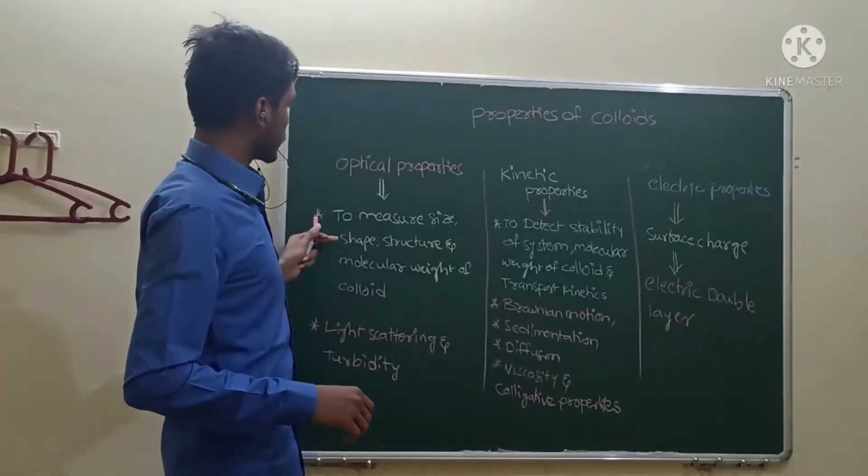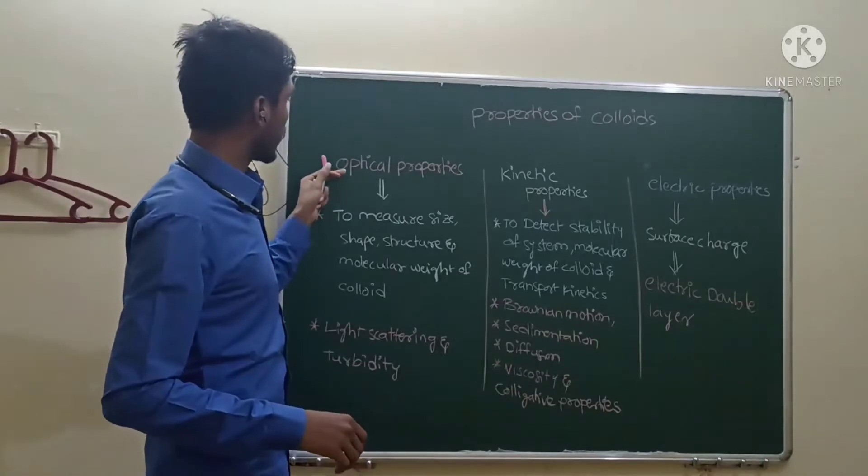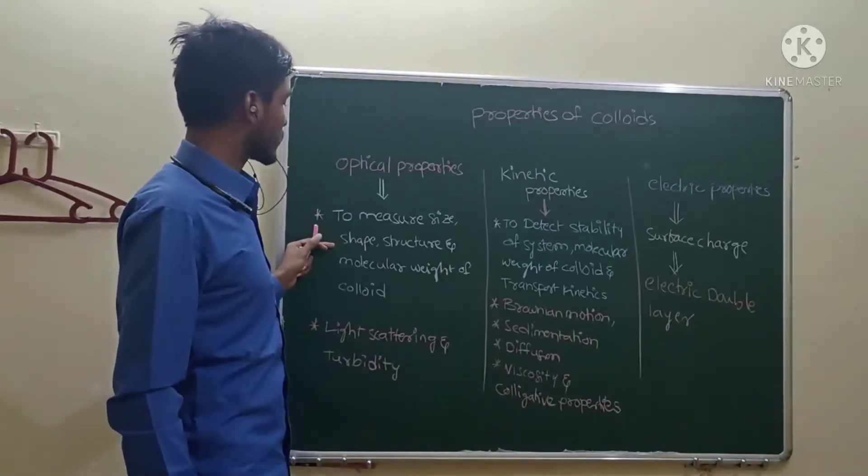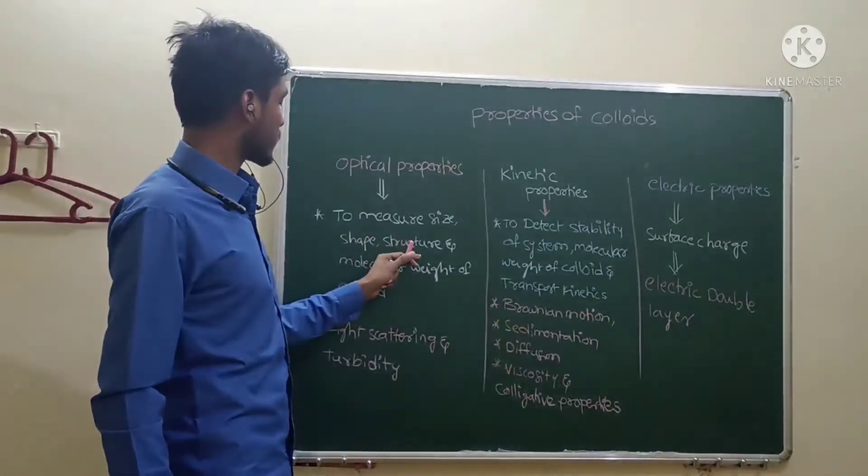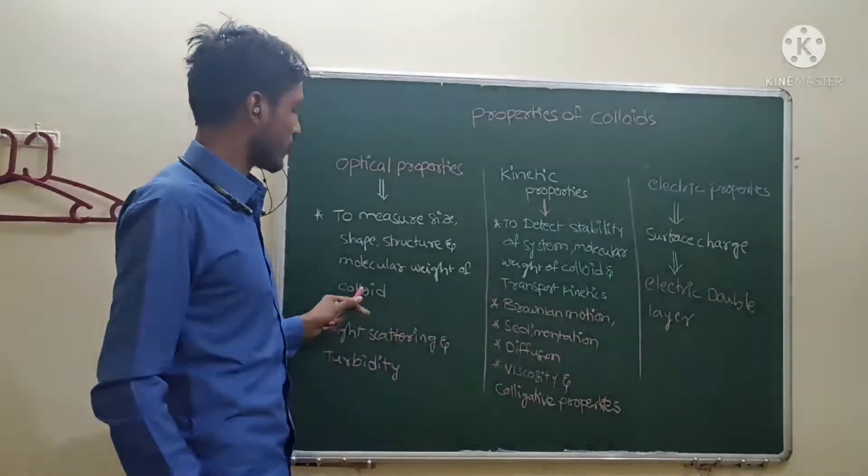Under the optical properties, what we can measure is: optical properties are used to measure the size, shape, structure, and molecular weight of colloids.